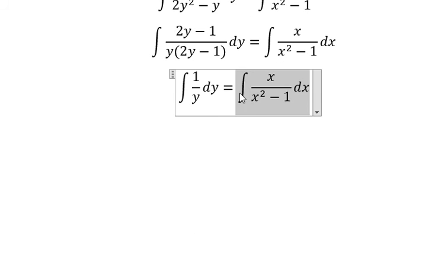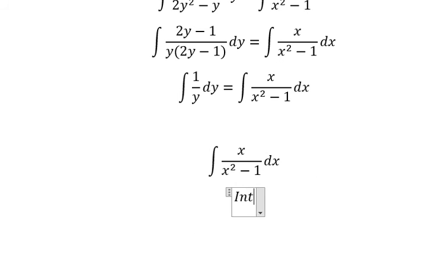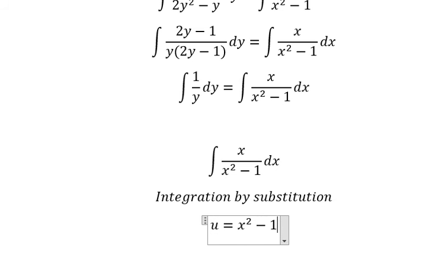Next I will concentrate about this one. We can use about integration by substitution. So I will put about u equal to x squared minus 1. Later that we do first derivative for both sides.